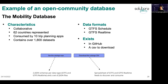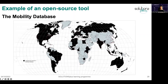The Mobility Database exists on GitHub but also as a CSV download so it can be easily parsed by a machine. Today, the different datasets are all on a map that is getting wider in coverage.